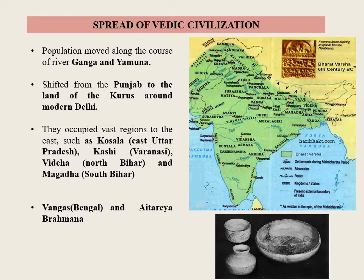The Aitareya Brahmana mentioned the Andhras, who in modern times are the Telugu-speaking people of southern India. Thus, the territories occupied by Later Vedic Aryans comprise the whole of India north of the Narmada, and some regions even to the south of that river.